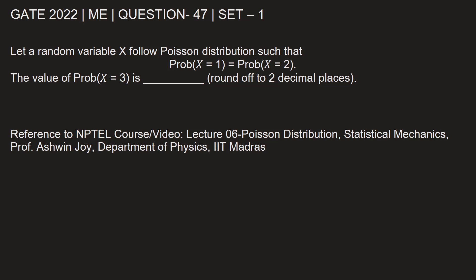Let a random variable X follow Poisson distribution such that probability for X equal to 1 is equal to probability for X equal to 2. The value of probability for X equal to 3 is dash.